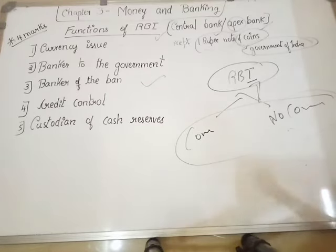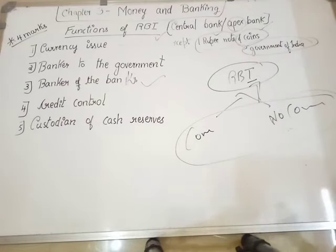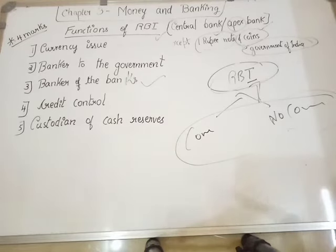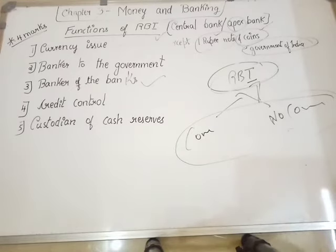The third function is banker of banks. All banks come under RBI itself. RBI regulates, controls, and monitors all banks. It does not interfere in the day-to-day working of the banks. But in case a commercial bank faces a financial crisis — if it is running short of money or has a problem — it can always go and ask for help from RBI. So RBI acts as a banker for all the banks.